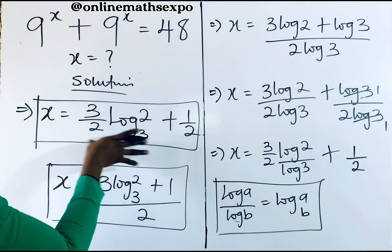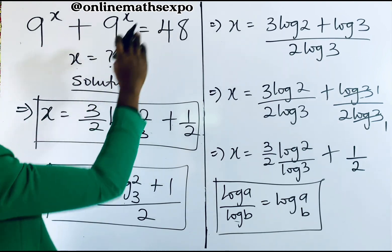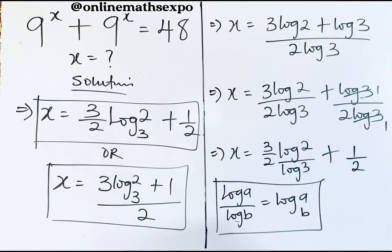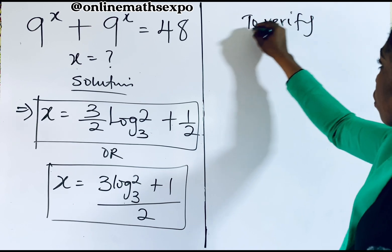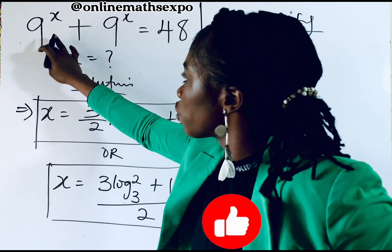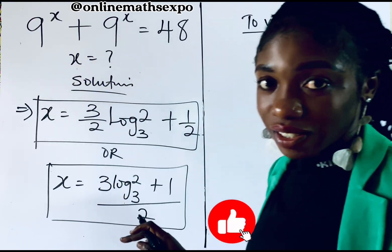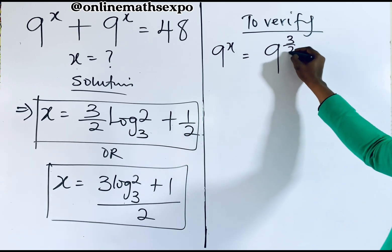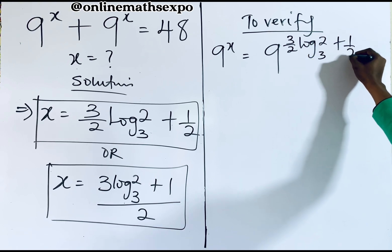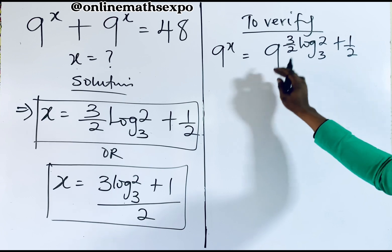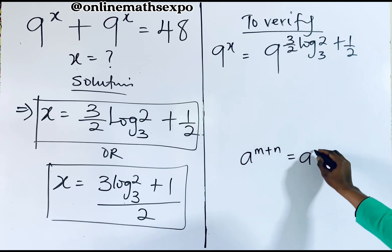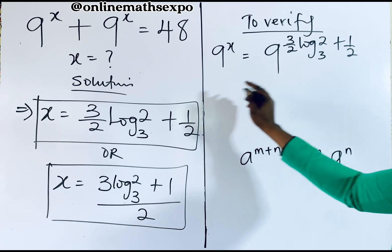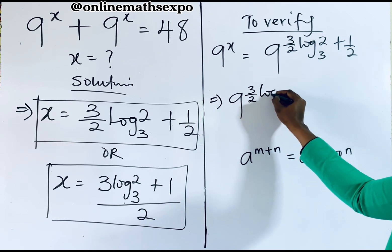Now we are going to do a little check — we plug this value of x into the left side to see if it gives us 48. To verify, we take 9 to the power of x, where x is 3 over 2 times log base 3 of 2, plus one half. Remember that a to the power of m plus n equals a to the power of m multiplied by a to the power of n, so we split it: 9 to the power of 3 over 2 log base 3 of 2, times 9 to the power of one half.